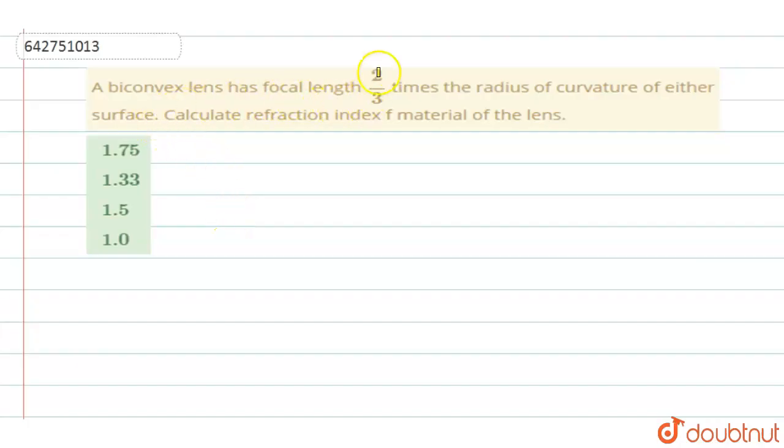A biconvex lens has focal length 2 by 3 times the radius of curvature of either surface. Calculate refractive index of the material of the lens.